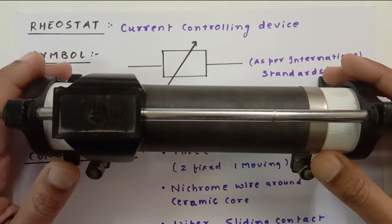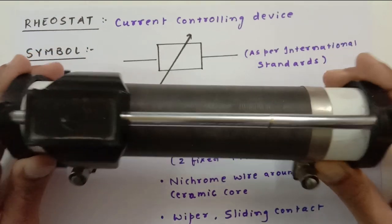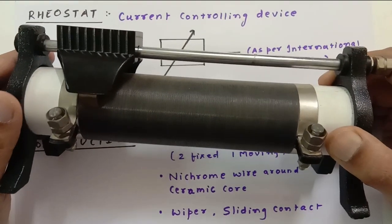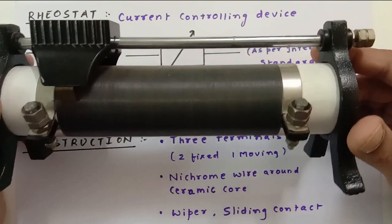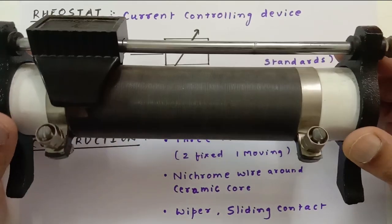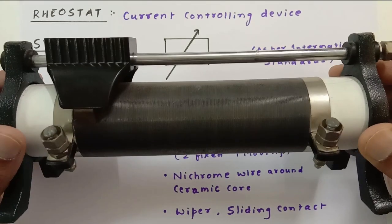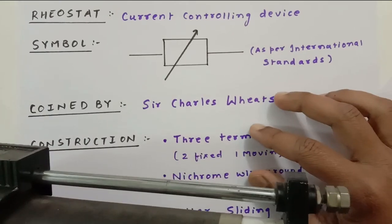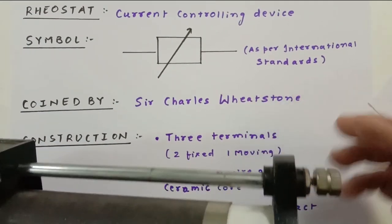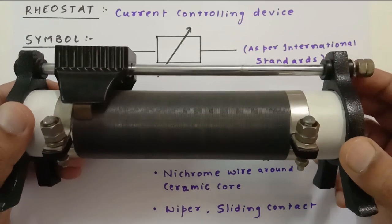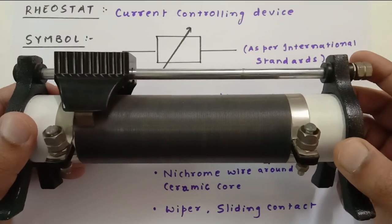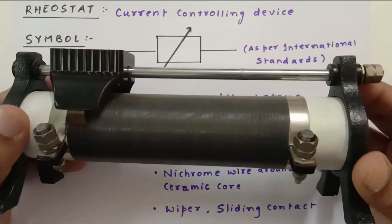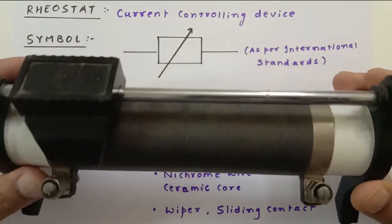Hello scientific people. Today I am going to talk about a very interesting electrical device that is generally used till grade 12, and this is called rheostat. Rheostat itself is a very interesting instrument and is also sometimes called a variable resistor. So let us understand the principle and the construction as well.